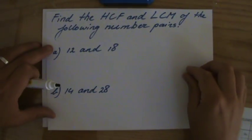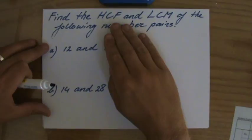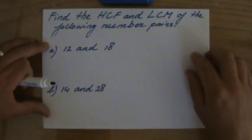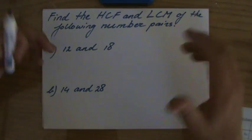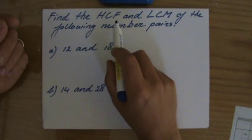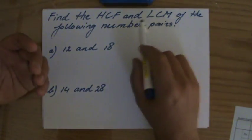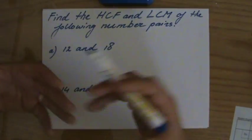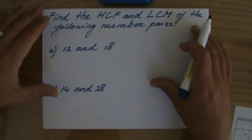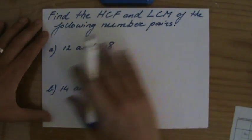The question is to find the highest common factor and lowest common multiple of the following number pairs. In my previous video I've explained what the highest common factor (HCF) and the lowest common multiple (LCM) are and what they mean, so make sure you have seen that video before you try this one.